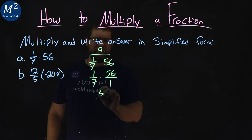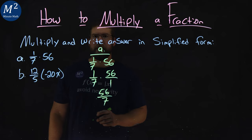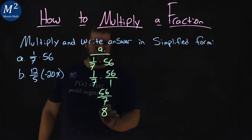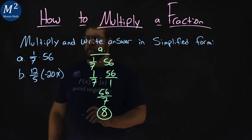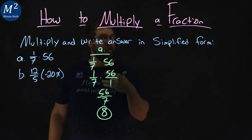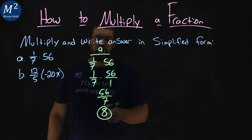1 times 56 is 56, 7 times 1 is 7. Now 56 divided by 7 is 8. That came out pretty easy. And so 1/7 times 56 is the same thing as 56 divided by 7. Think about it. It's 8.